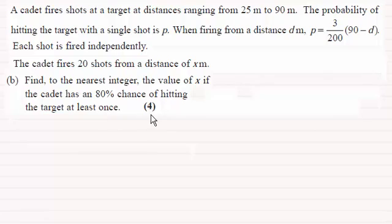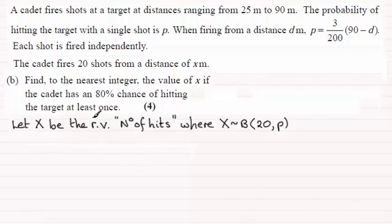So what I'm going to be doing is taking a random variable. Let's define X as being the random variable, the number of hits. We know that X will be distributed as a binomial distribution. n would be 20 because the cadet fires 20 shots, but we don't know what p is.